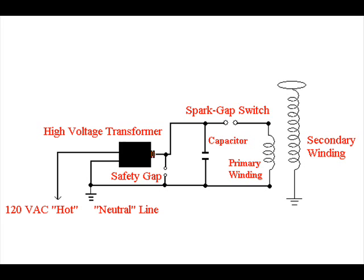Getting inductance, capacitance, and frequency to be balanced is known as tuning the Tesla coil. One of the most common ways of tuning is to adjust the inductance in the primary winding by adding or removing turns. Start with a higher number of turns — maybe 10 or 12 — and then one by one remove turns and test the Tesla coil each time to see if there is any improvement in the output. Making small adjustments in the spark gap can also help to tune the Tesla coil.